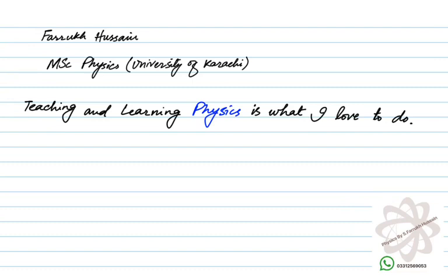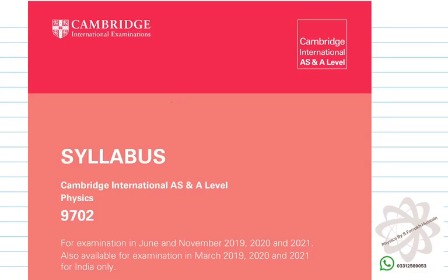First of all what you need to have is the syllabus which is officially given to the students on the Cambridge website. The subject code you people have is 9702 physics.